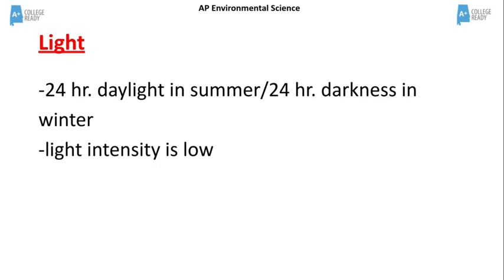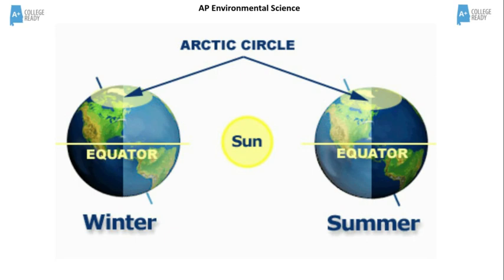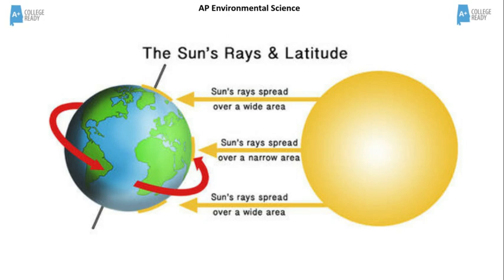Light availability in the tundra depends on the season. At some points during the summer, there are 24 hours of daylight. Then in winter, there is 24 hours of darkness for a period of time. Light intensity is low. This diagram shows the 24-hour daylight or darkness depending on the season, and also shows sun rays spread over a larger area, which results in lower intensity.